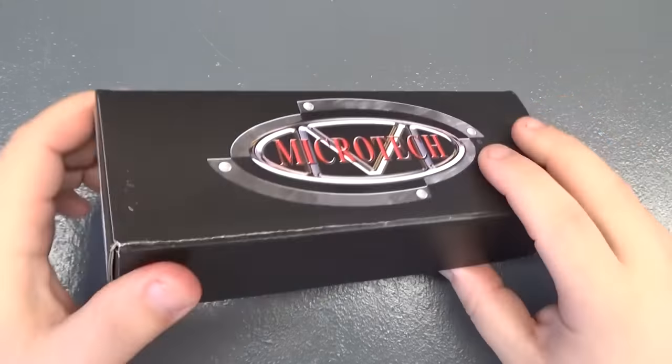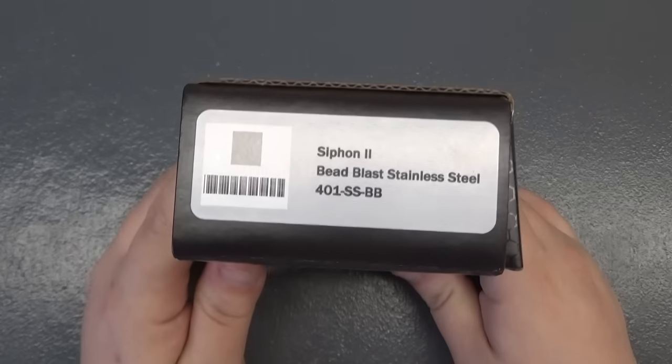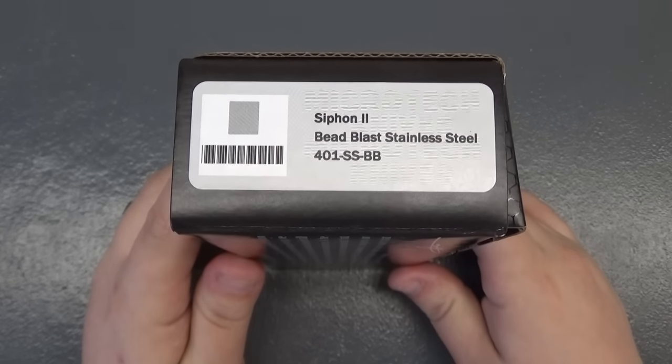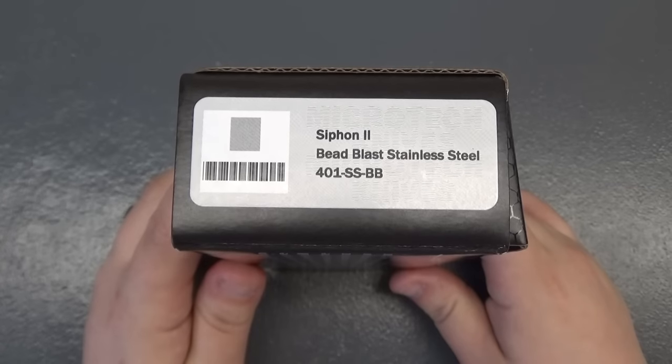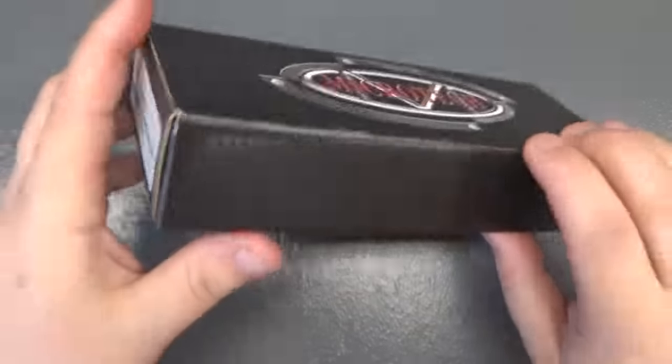Okay, here we go with a look at the Microtech Siphon 2. This is a bead blasted stainless steel version, item number 401-SS-BB.